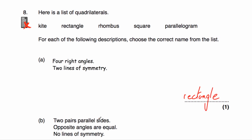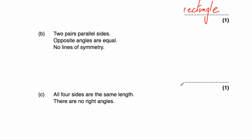Part B: two pairs of parallel sides — that rules out a kite. The opposite angles are equal, and it has no lines of symmetry. A rectangle has two, a rhombus has two, a square has four, but a parallelogram has no lines of symmetry. So part B is a parallelogram.